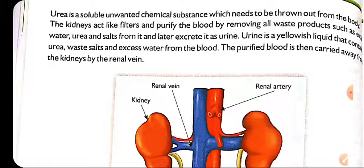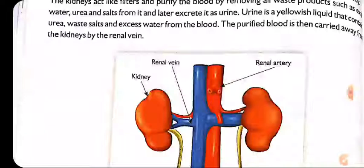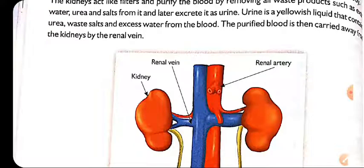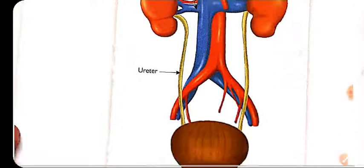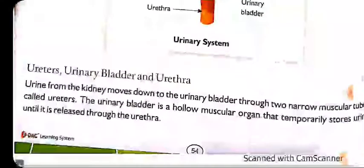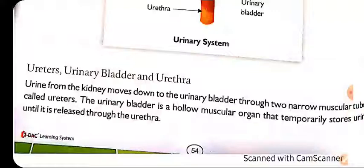Urine is a yellowish fluid that contains urea and other metabolic waste products. The purified blood is then carried away from the kidneys by the renal veins. The renal veins collect the filtered, pure blood from the kidneys and supply it to the rest of the body.